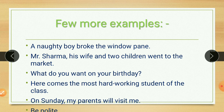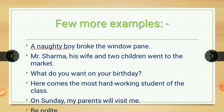Let's see a few more examples. You can also revise with me and check your answers. 'A naughty boy broke the window pane.' Whom we are talking about? 'A naughty boy' — that is the subject. What is the predicate? 'Broke the window pane.' Next: 'Mr. Sharma, his wife, and two children went to the market.' Whom we are talking about? Mr. Sharma, his wife, and two children — everything is underlined as the subject. The predicate is 'went to the market.'